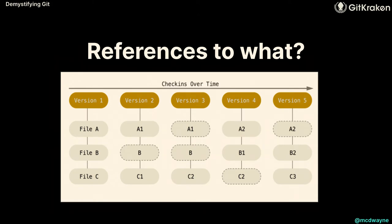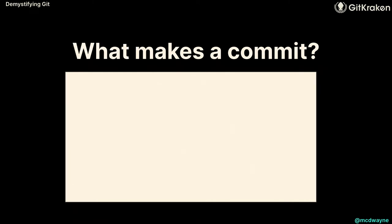Git takes a full snapshot of the file system every time — we're not storing diffs, we're storing snapshots. If a file did not change between version 2 and version 3, Git doesn't make a whole new snapshot — it just points back to the last commit. But if a file changed, it's a new snapshot. Files that didn't change point all the way back to the beginning. Very efficient.